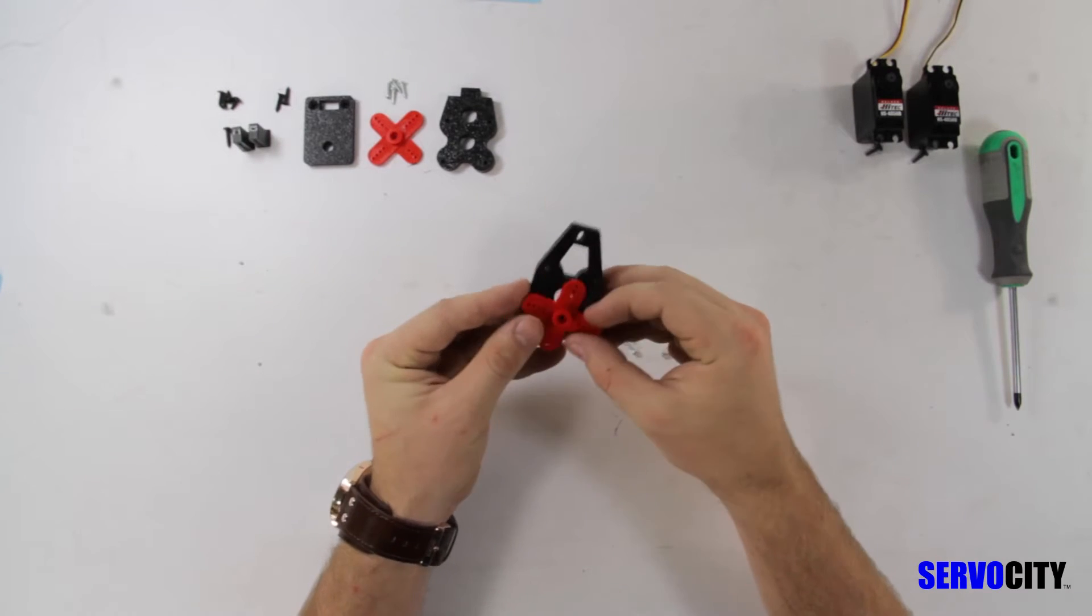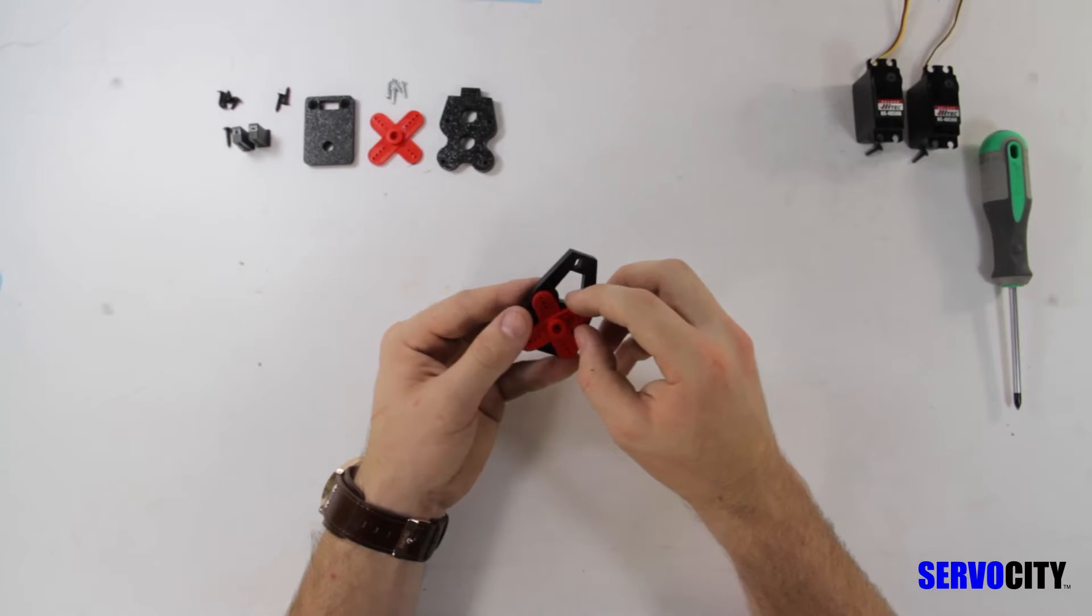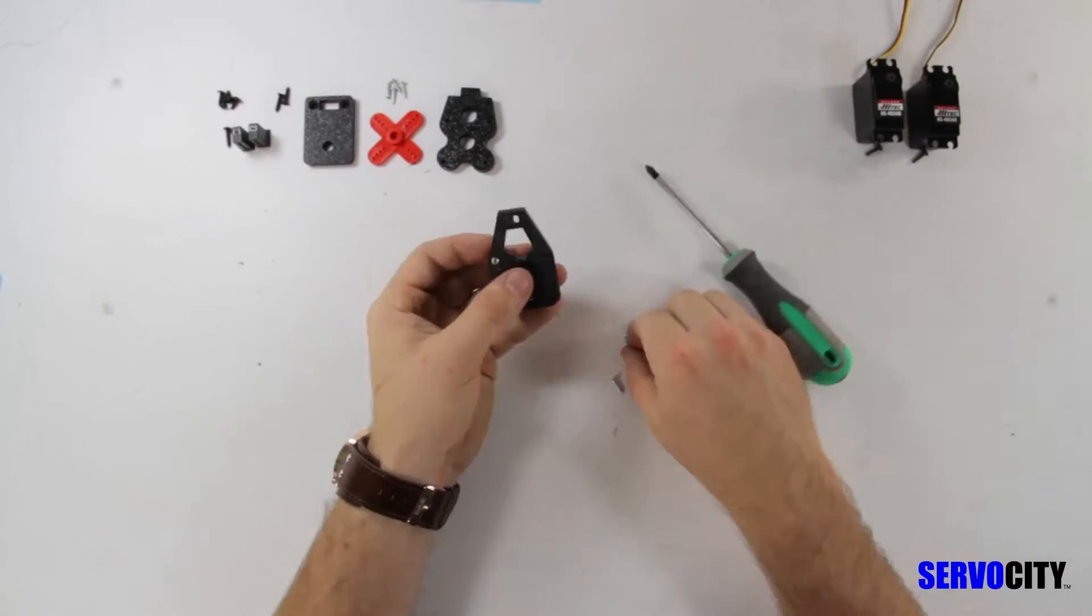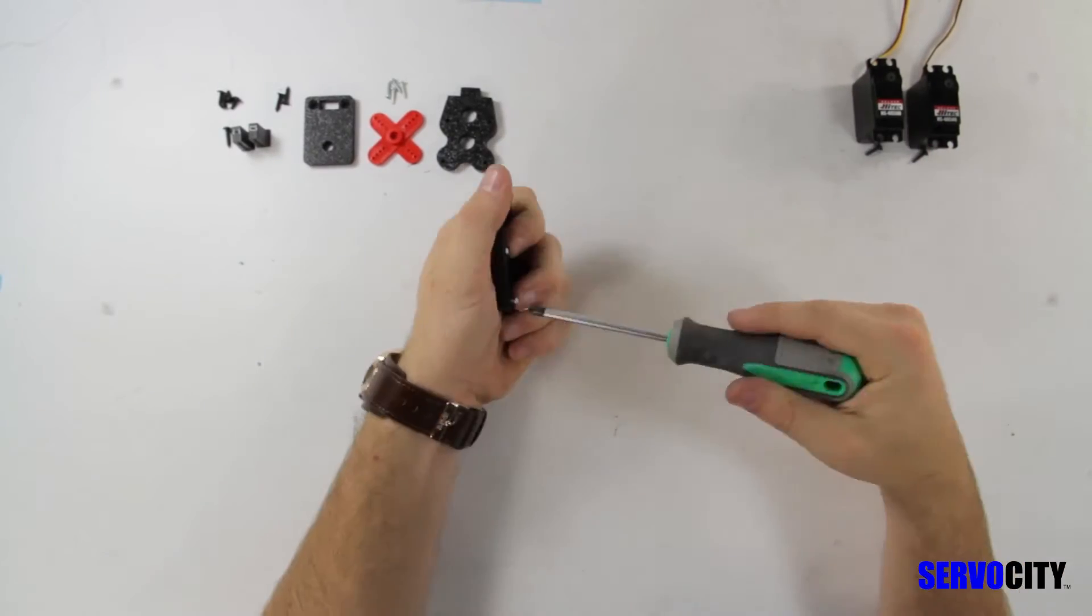Take note that the servo horn is not symmetrical. One of the arms has four holes whereas the other has three. For this plate you will want to position the four hole arms so that it is on the top right and the bottom left.